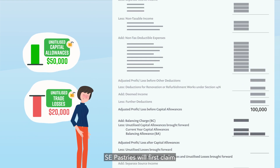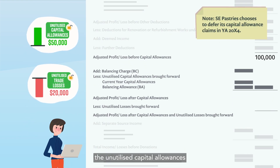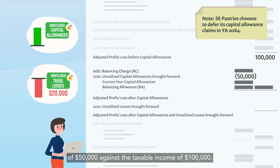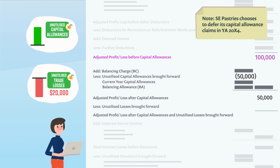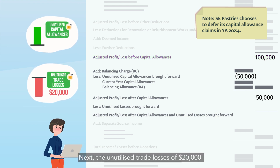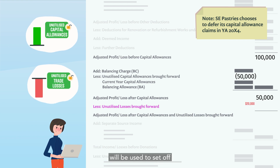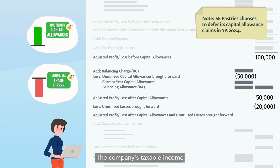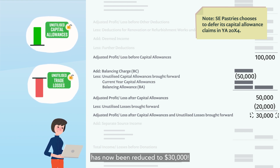SE Pastries will first claim the unutilised capital allowances of $50,000 against the taxable income of $100,000. Next, the unutilised trade losses of $20,000 will be used to set off against the remaining income. The company's taxable income has now been reduced to $30,000.